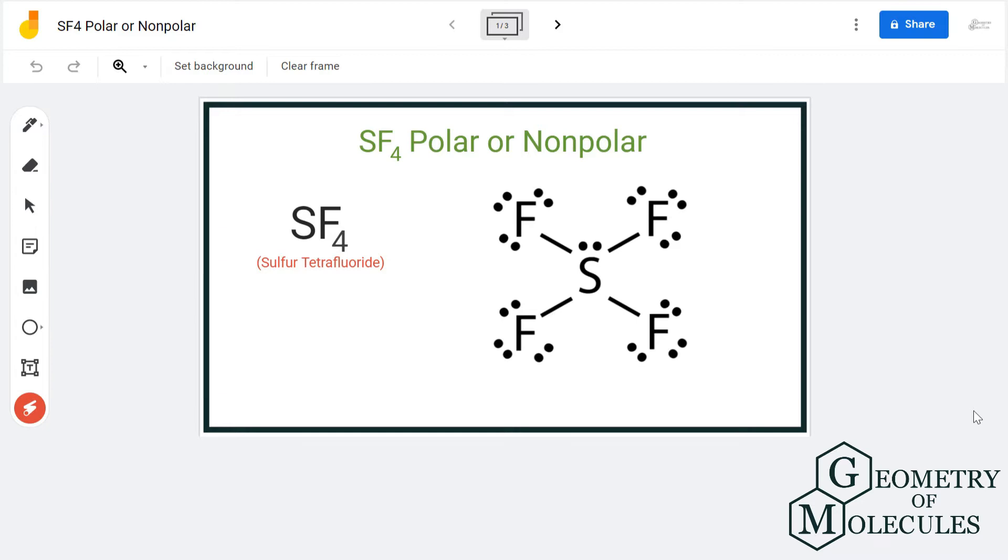Hi guys, today in this video we are going to determine the polarity of SF4 molecule. It's a chemical formula for sulfur tetrafluoride because it is made up of one sulfur atom and four fluorine atoms.